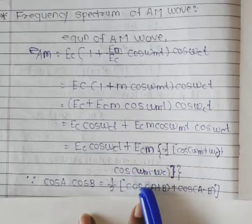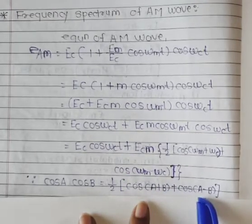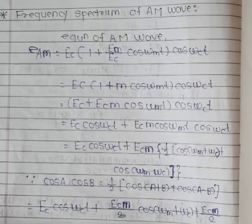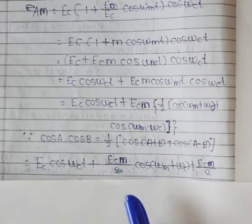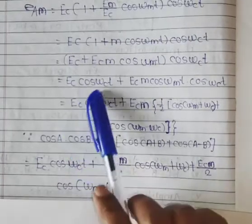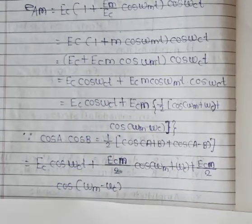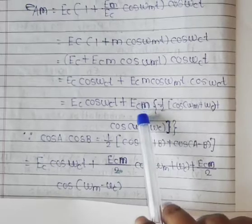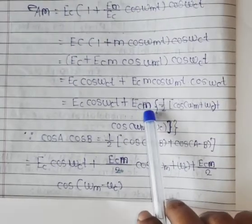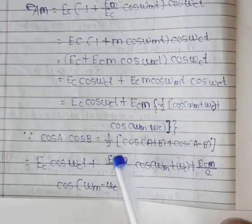The first term is the same: E_c*cos(ω_c*t). The second term: here is the modulation index. We are going to multiply by 2, so what will it be? E_c*m/2.